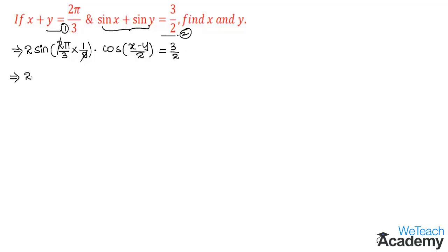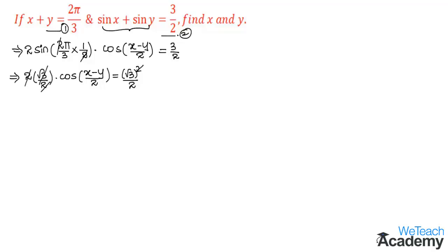So that implies we get 2 sin(π/3), which is √3/2, into cos((x−y)/2), which is equal to √3/2, written as (√3)²/2. Here 2 and 2 cancel, and then √3 on the LHS gets cancelled.